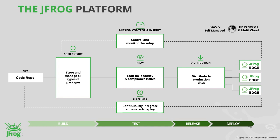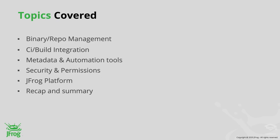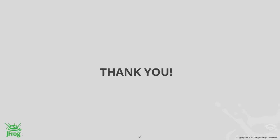Here's the recap: we talked about binary repository management, CI build integration using Jenkins specifically, the power of metadata and how to use it for searching and resolving artifacts along with automation tools, security and permissions with fine-grained control over who has access to what, and a quick overview of the JFrog platform. Thank you. I'm going to look at some of the questions that came through.